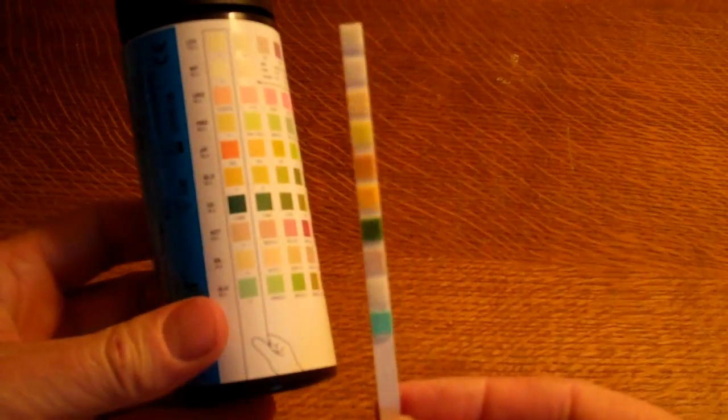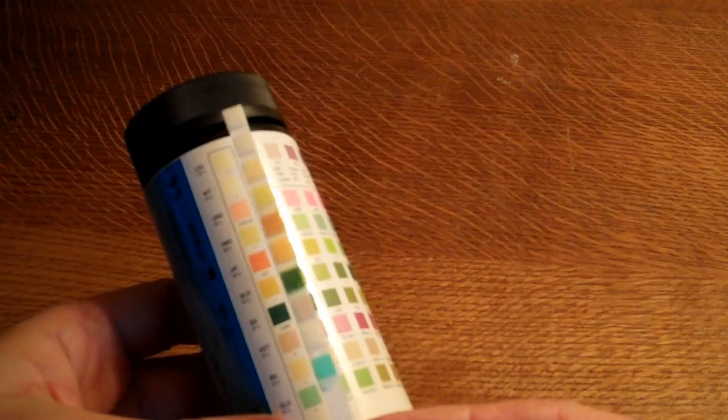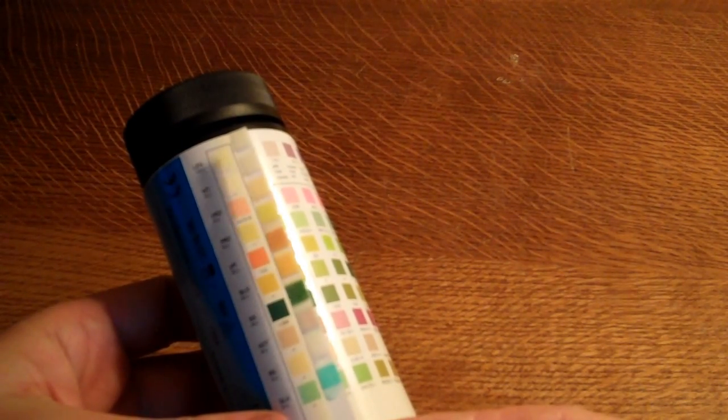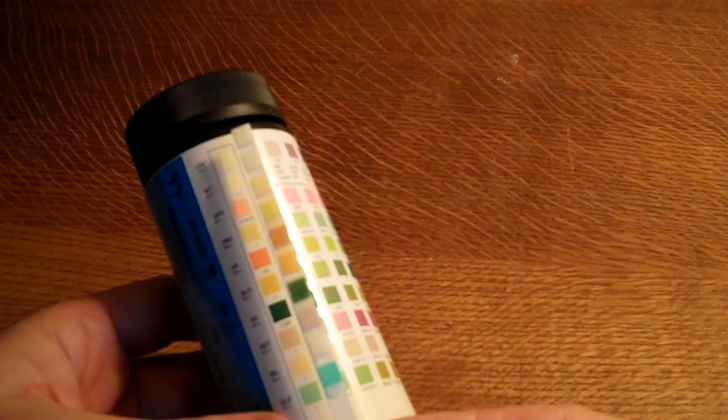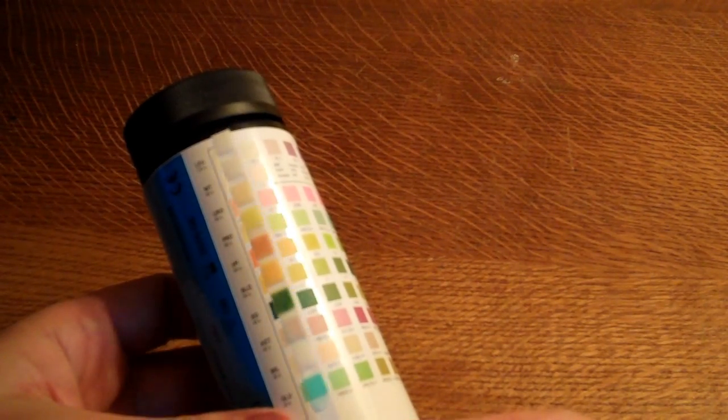Okay, so this dip test has been dipped two minutes ago, and again you're looking at this first column. If it matches all these colors on the pad exactly at two minutes, then you've got an all negative result. It's not detected any of these.